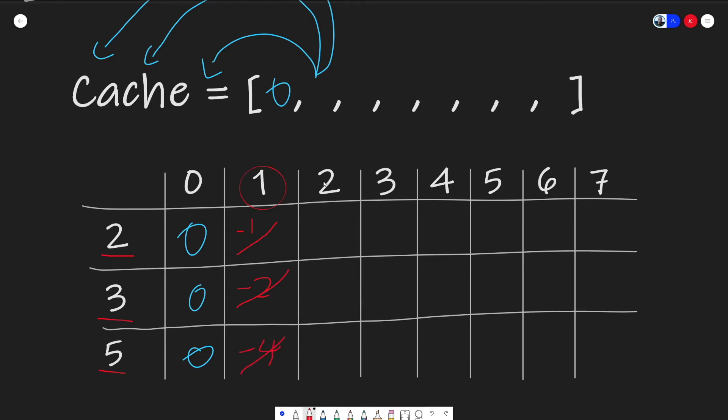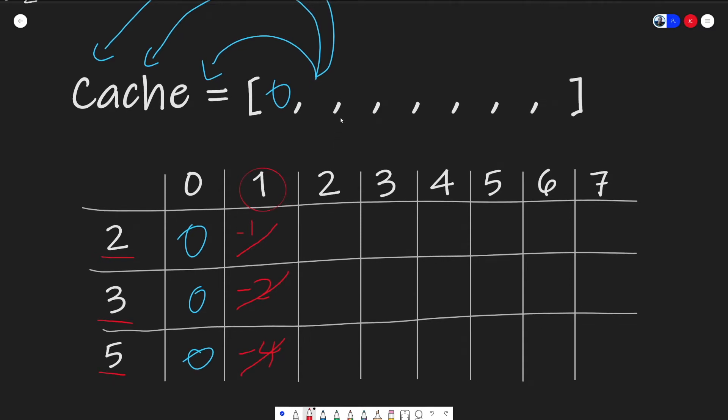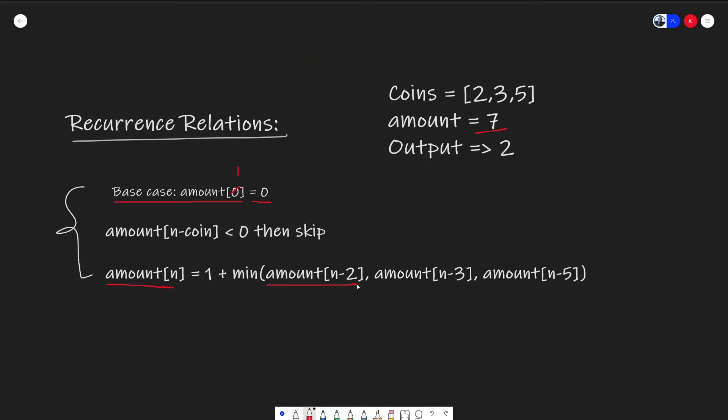Before I let Scott take it away, there is a specific equation that I want to show you now that we demonstrated this. To find the minimum amount of coins used, we need to find the minimum amount used for our amount minus our two coin, our amount minus our three coin, and our amount minus our five coin, plus one to count to include the coin that we used.